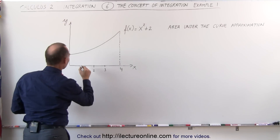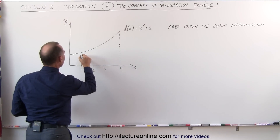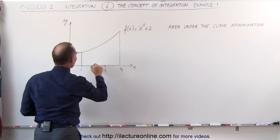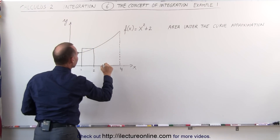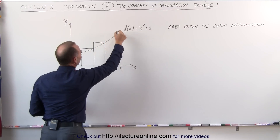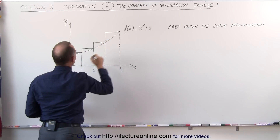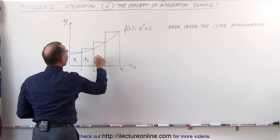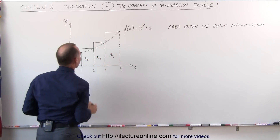We're going to draw four rectangles. The first rectangle will have a height equal to this, the second rectangle will have a height equal to this, the third rectangle, and then the fourth rectangle. This is area one, this is area two, this is area three, and this is area four.